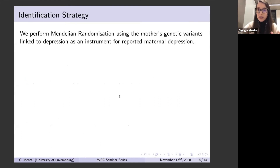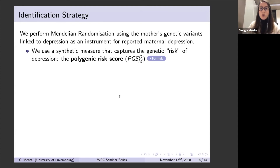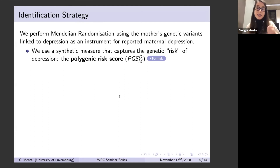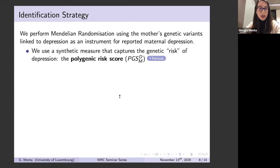For the identification strategy, we use a synthetic measure capturing genetic risk of being depressed called the polygenic risk score. It's a weighted sum of all the genetic variants involved in the phenotype of depression. We combine them together to avoid weak instrument problems, since each individual genetic variant has a very small effect on the probability of being depressed. By combining them into a single score, we maximize the power of our instrumental variable. The weights reflect the relative importance of each genetic variant in shaping depression.